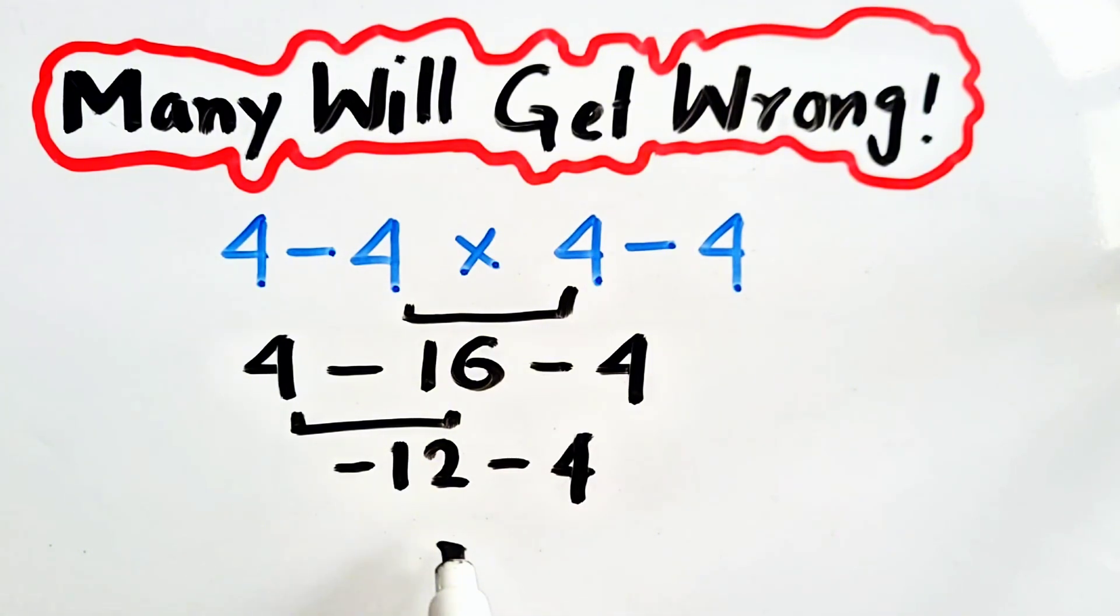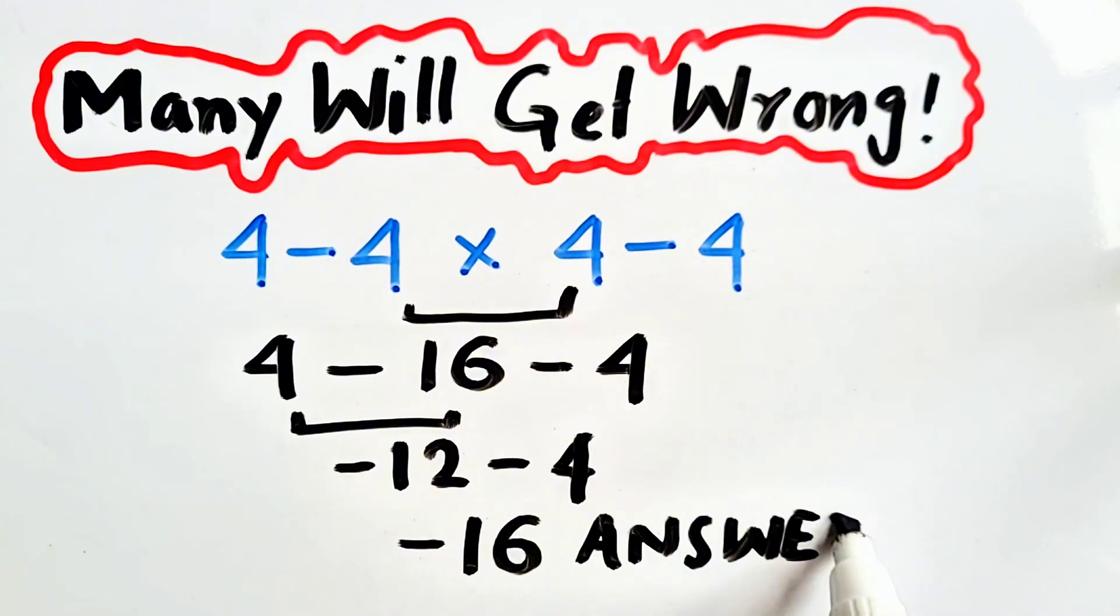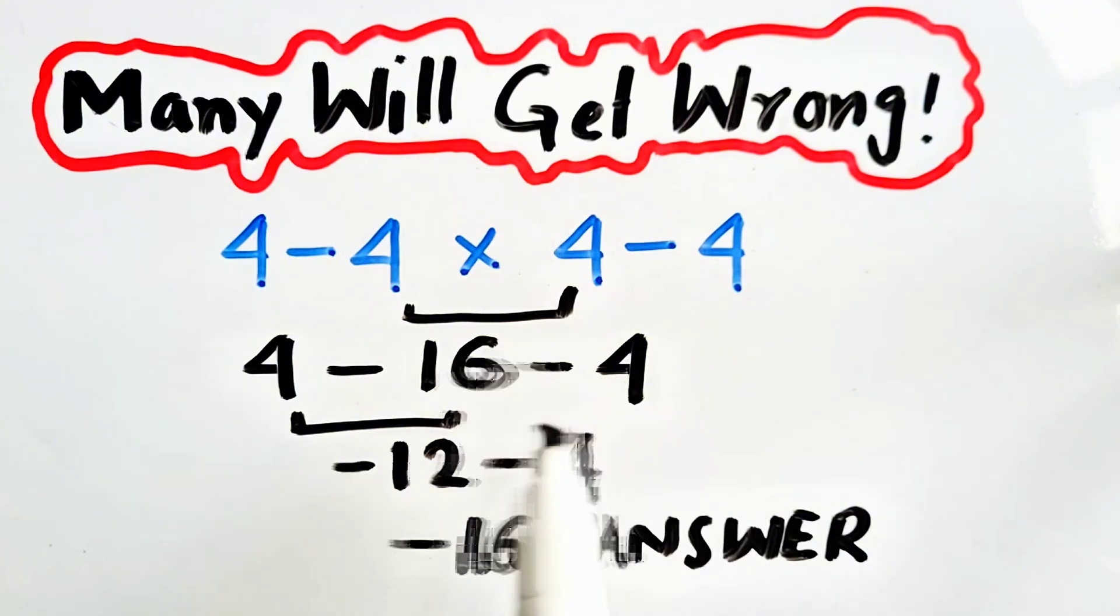Now, minus 12 minus 4 will be equal to minus 16, which is our correct answer in this question. By obeying order of operations, like BODMAS, PEMDAS, or BIDMAS, we got minus 16 as the correct answer.